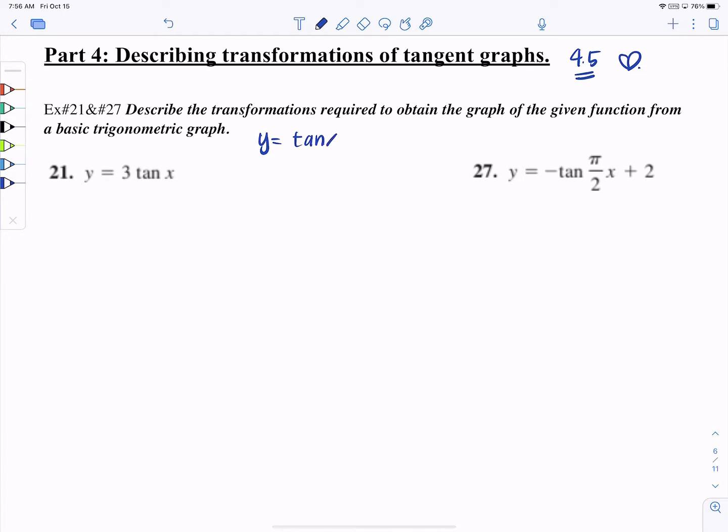So your basic graph is going to be y = tan x. Let's compare it to that. Number 21, I want you to think about it first and think about what happened and picture it. The amplitude is 3, so I wonder what's going to happen to the tangent graph.